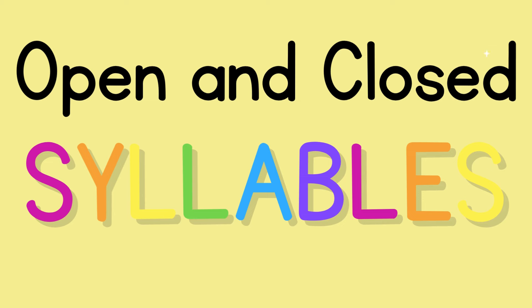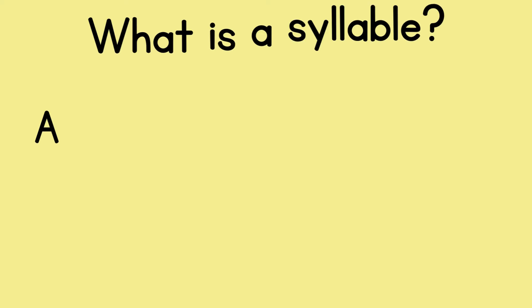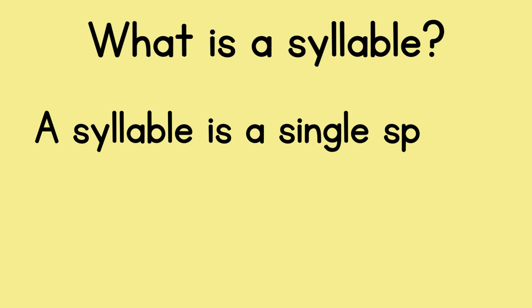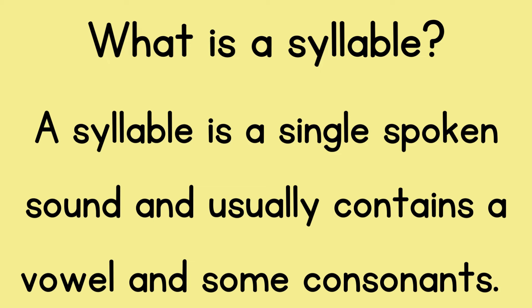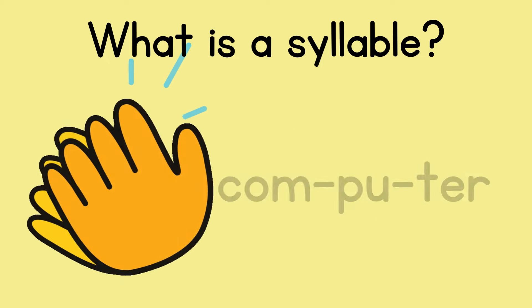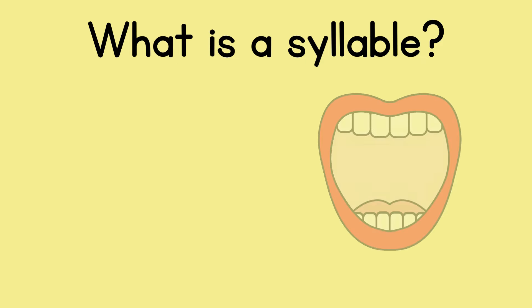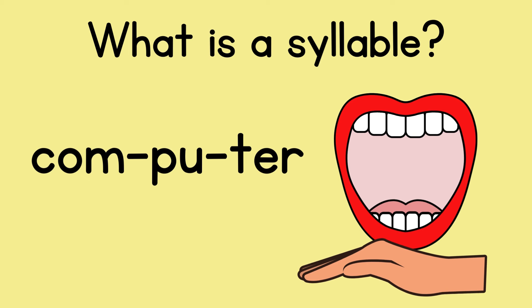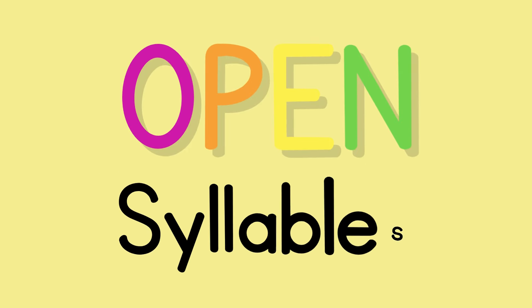Open and closed syllables — we are going to learn about two types of syllables. But first, what is a syllable? A syllable is a single spoken sound and usually contains a vowel and some consonants. You can notice syllables by how many claps the word has, or also by how many times your mouth opens. Every syllable has a vowel, and you need to move your mouth to say a vowel sound.